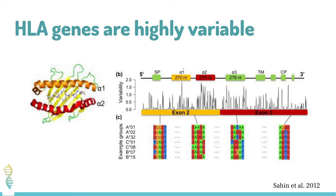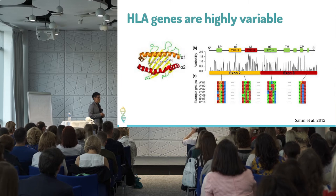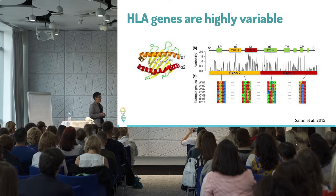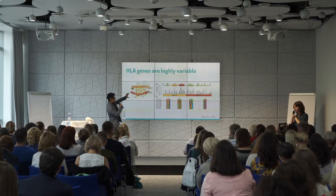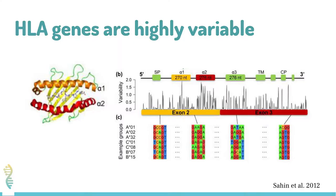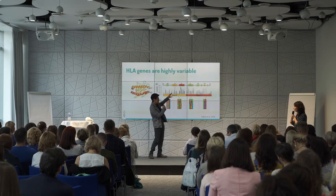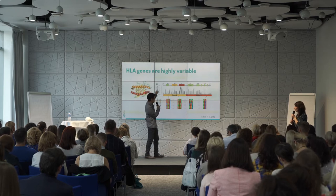HLA genes are highly variable because we need to present as many peptides as we can to defend from diseases. Here you can see the HLA gene and the peptides being presented in the center, and how different the amino acids are along these two indices between different individuals.